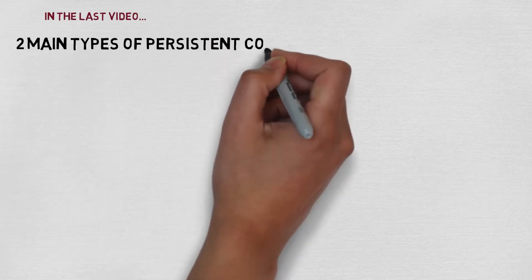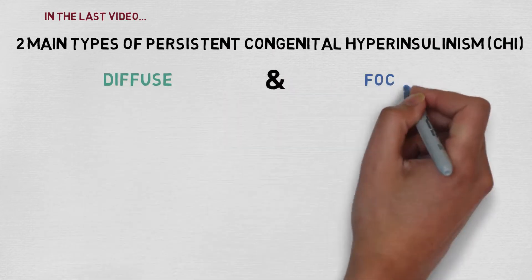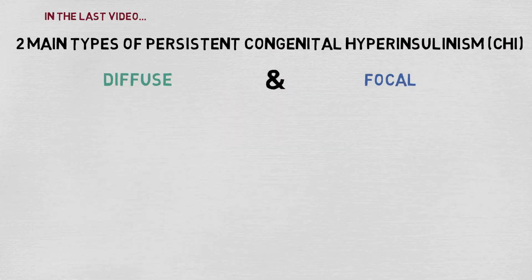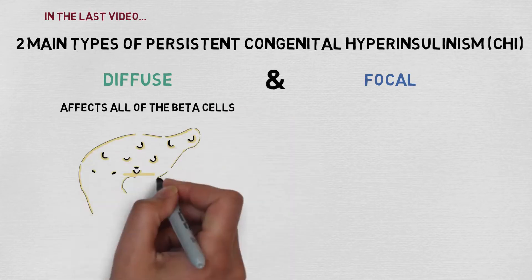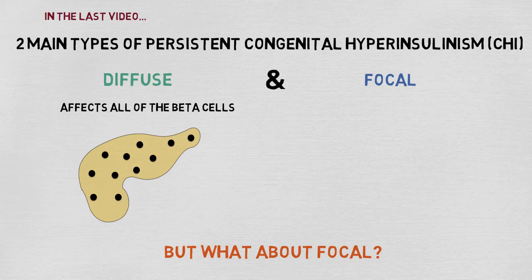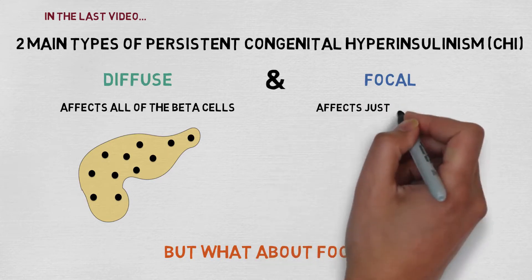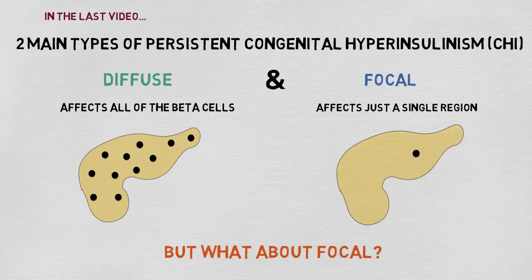In the last video you were introduced to the two main types of persistent CHI: diffuse and focal. We now know that diffuse CHI affects all of the beta cells throughout the entire pancreas, but what about focal? Focal CHI affects just a single region of beta cells in the pancreas.